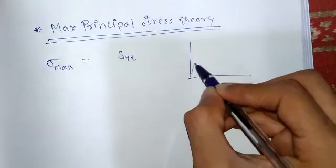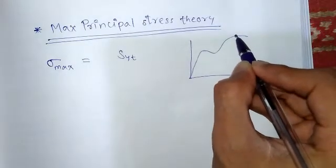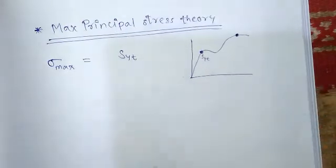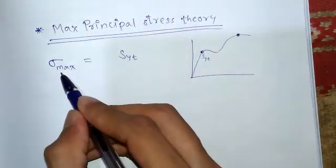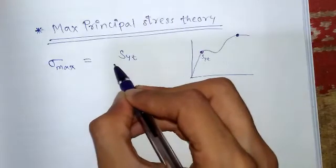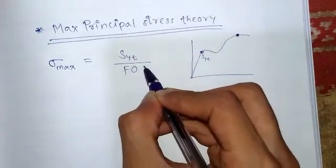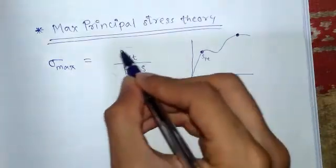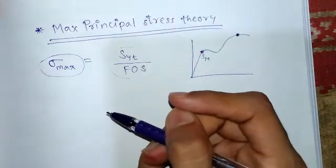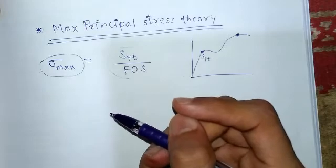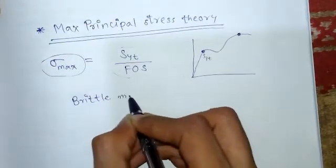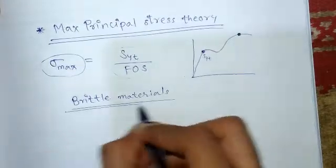In the stress-strength diagram, tensile strength is the ultimate strength, and yield strength is a lower value. We are talking about yield strength. So maximum principal stress is equal to Syd, which is yield strength. For safety purposes, we divide yield strength by the factor of safety. Using this formula we calculate the permissible stress value, and in this way we determine the dimensions of the component.